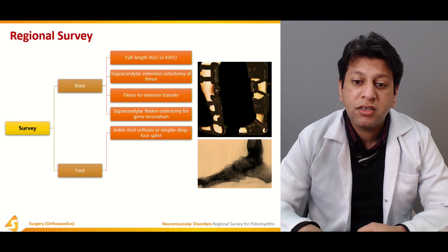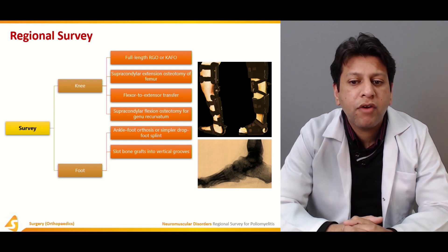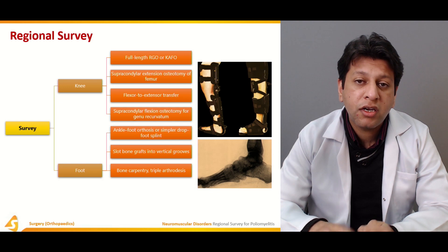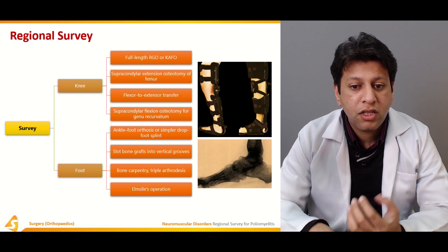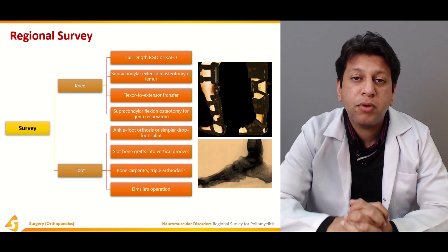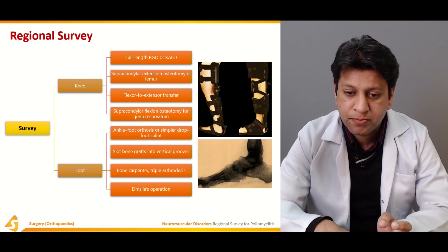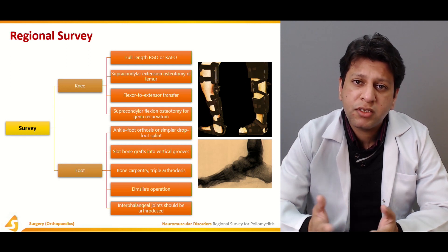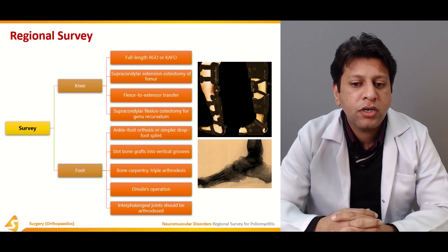Coming to the foot, there may be equinus deformities and plantar flexion contractures, which can initially be managed with an ankle-foot orthosis or a simple drop-foot splint if they are flexible. If they become rigid, surgery such as a slot bone graft may be required. Triple arthrodesis may be indicated, in which the talonavicular, calcaneocuboid, and subtalar joints are fused. A Dwyer operation may also be required for patellar maltracking, though this is usually associated with muscle imbalance. Hyperflexion or hyperextension of the toes can be dealt with by interphalangeal joint arthrodesis.